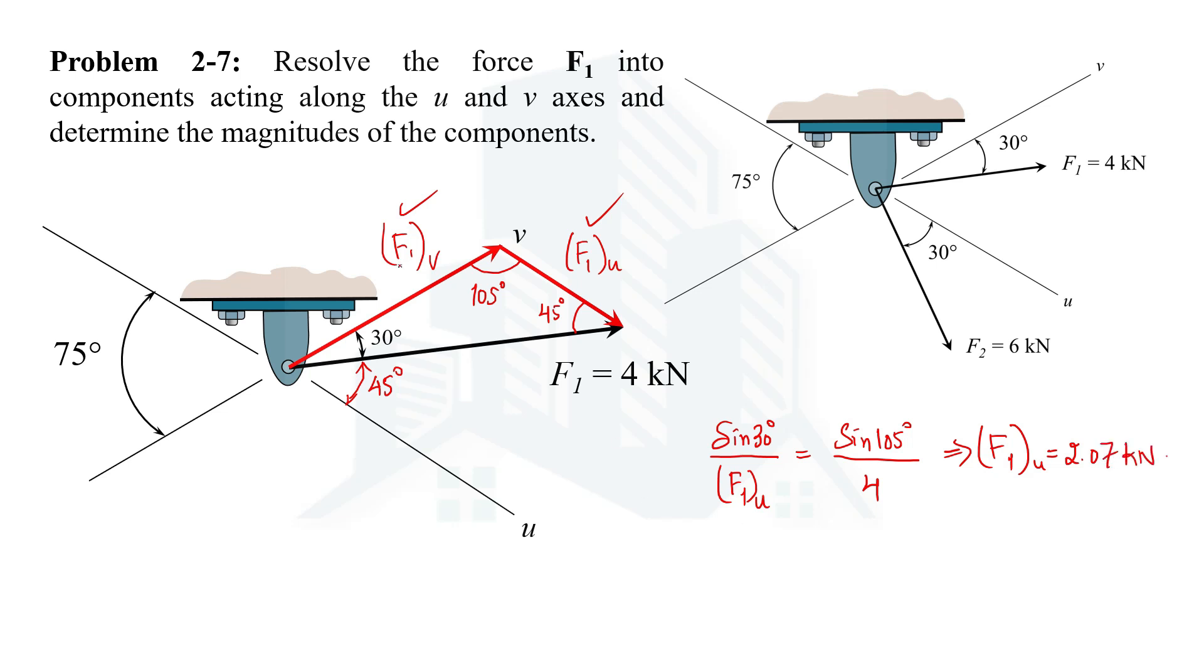In a similar way we can have F1u if we take the angle of 45 degrees. So sine 45 degrees will be divided by the opposite side, which in case of 45 is F1u. This is equal to sine 105 degrees divided by 4. On doing simple calculations we get the value of F1u equal to 2.93 kN. So these are the answers to which we were looking for.